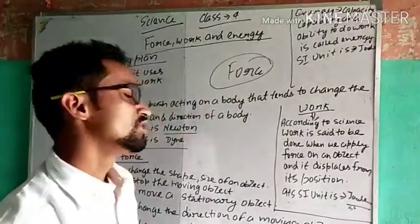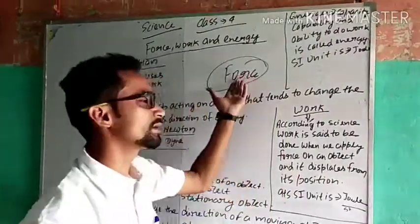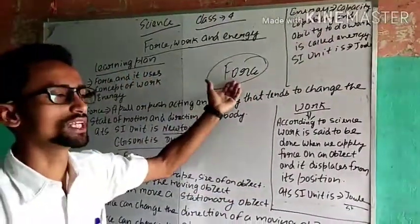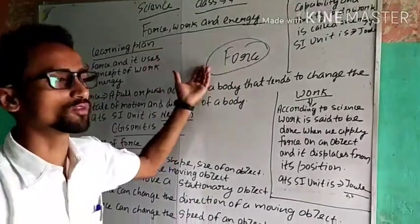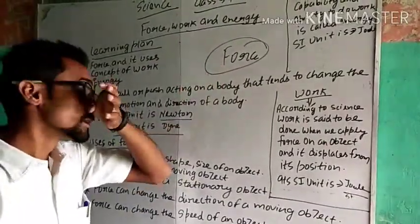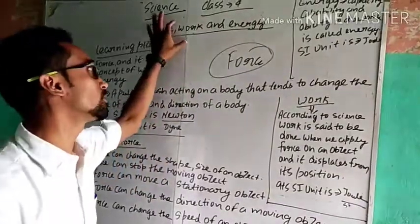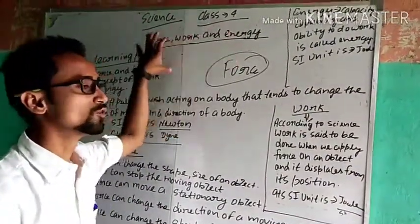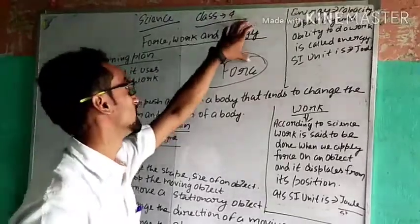Now, uses of force. In this chapter we have to learn about force and its uses, energy and its sources, different types of energy, and work. The chapter is categorized into three subgroups: force, work and energy.